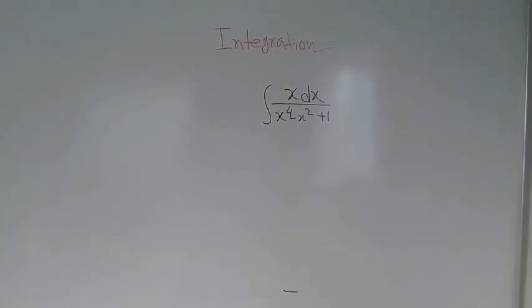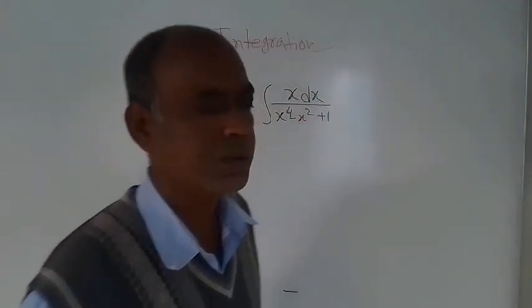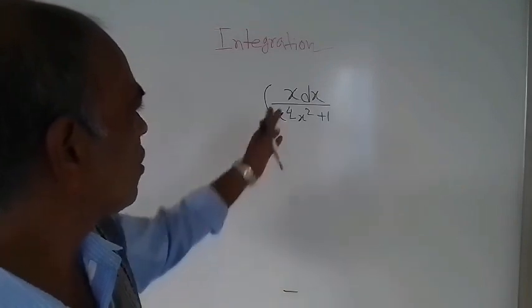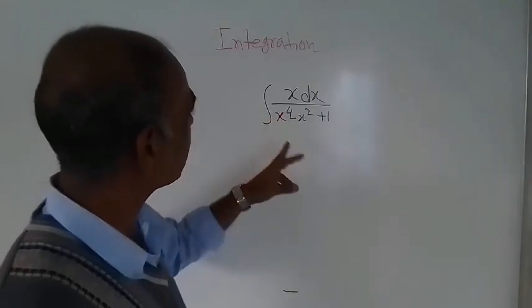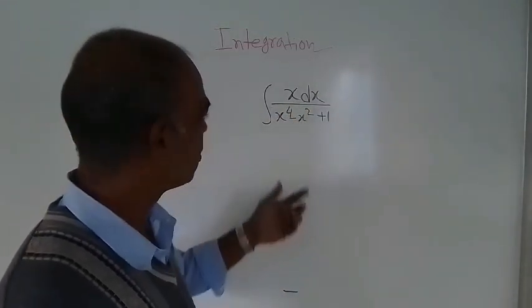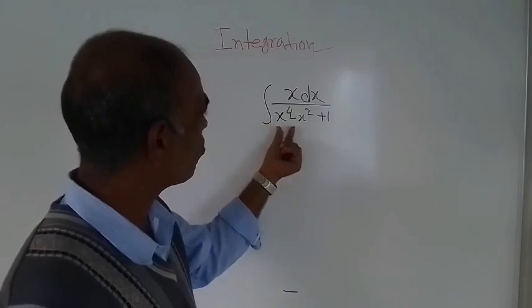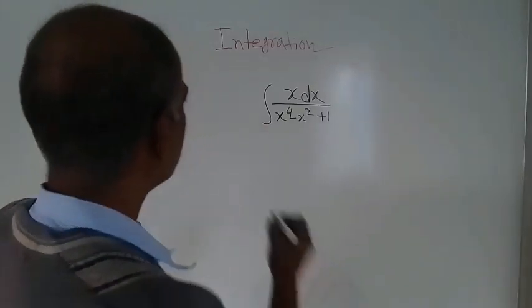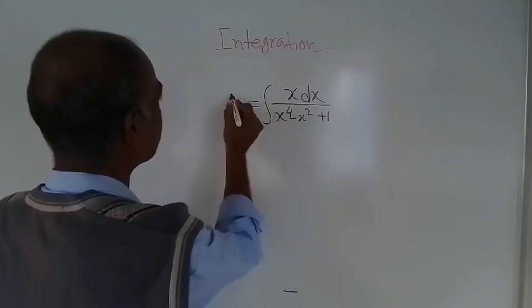Good morning. This is a problem on integration, specifically integration by the method of substitution. This is the given problem: integration of x dx divided by x to the power 4 minus x square plus 1. This is the given integrand.